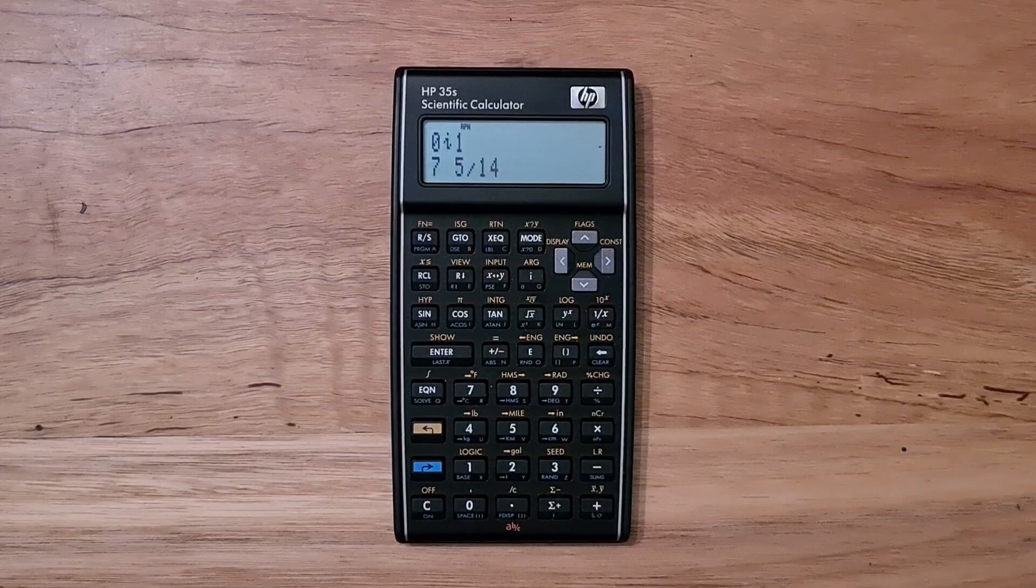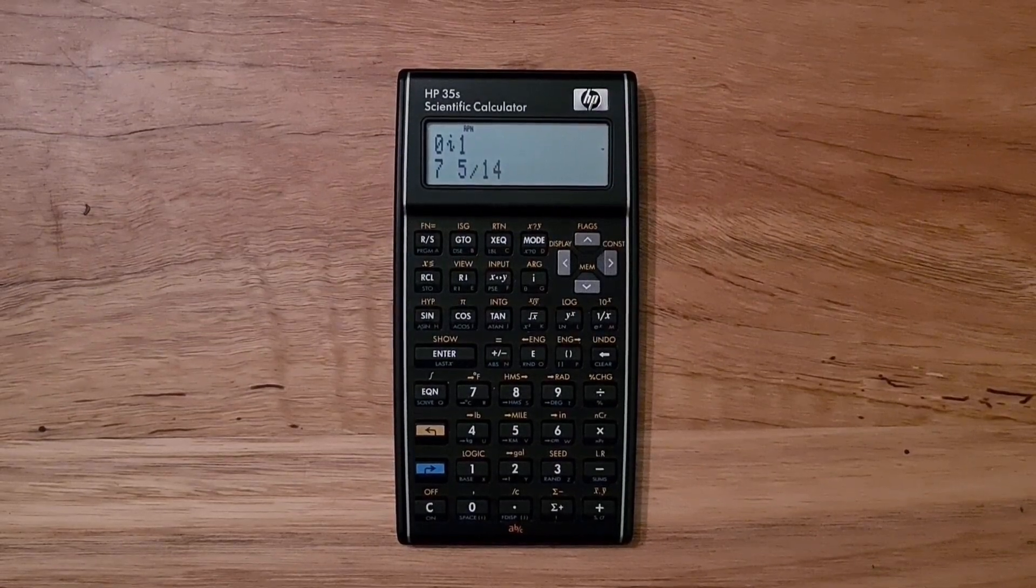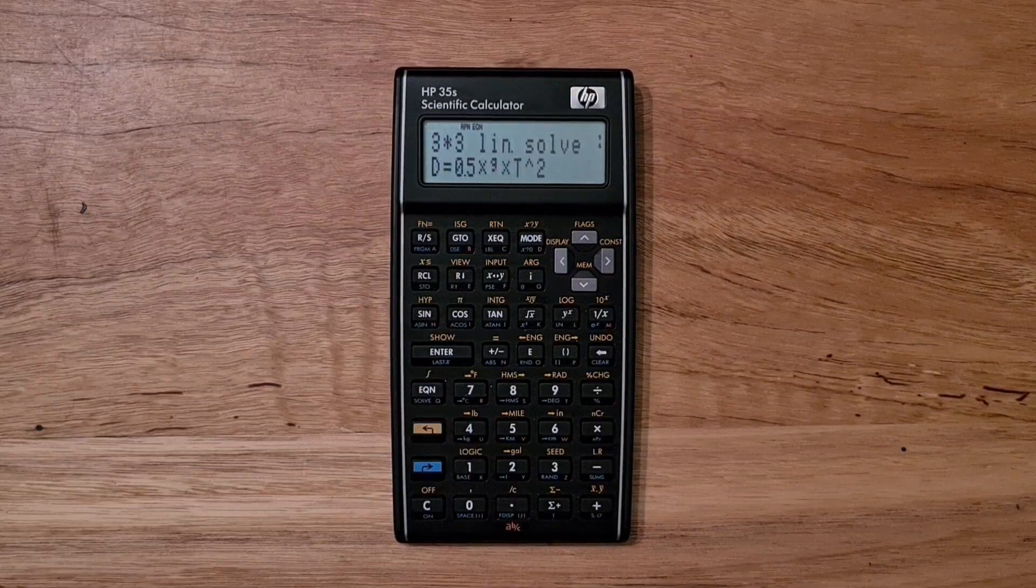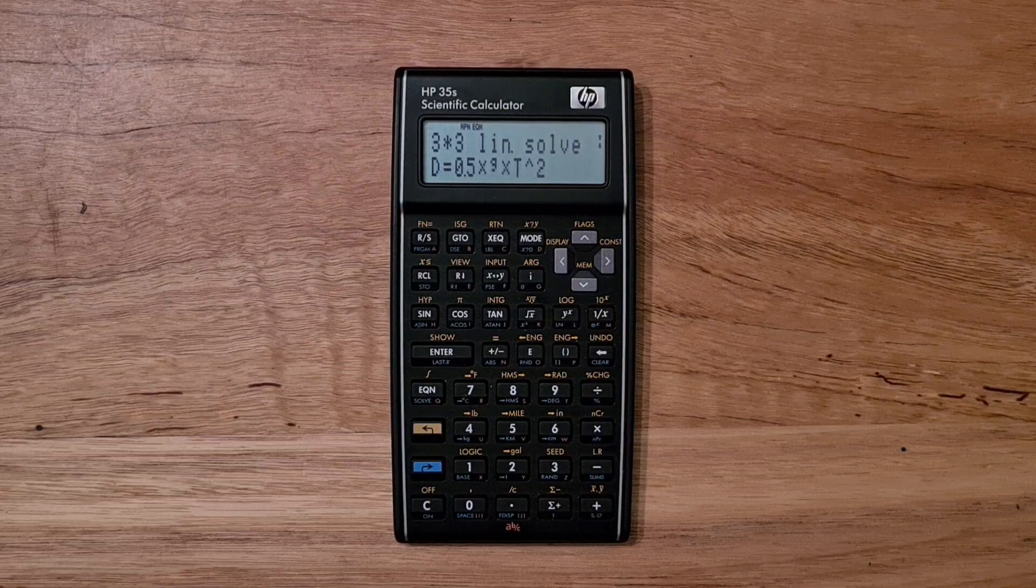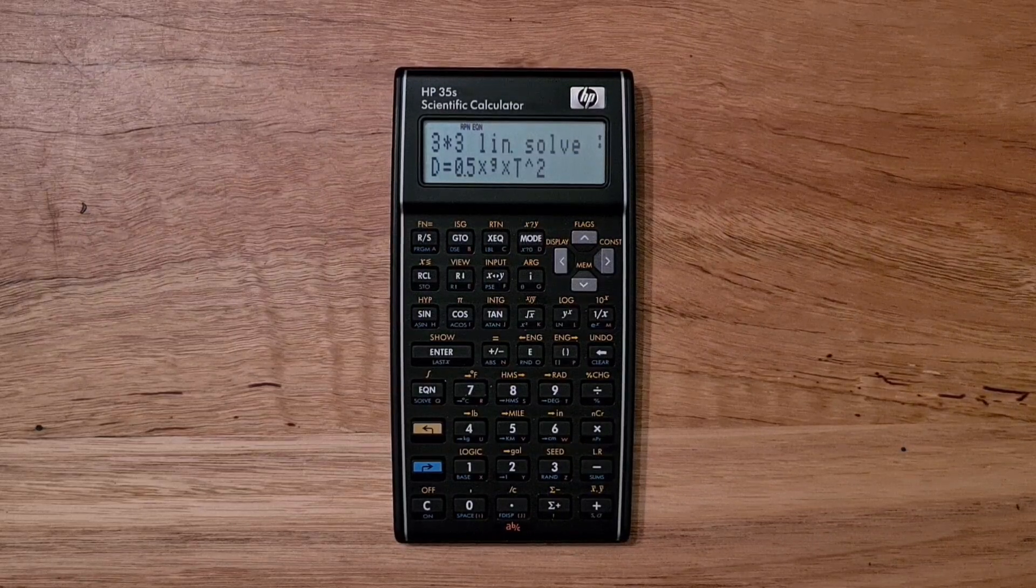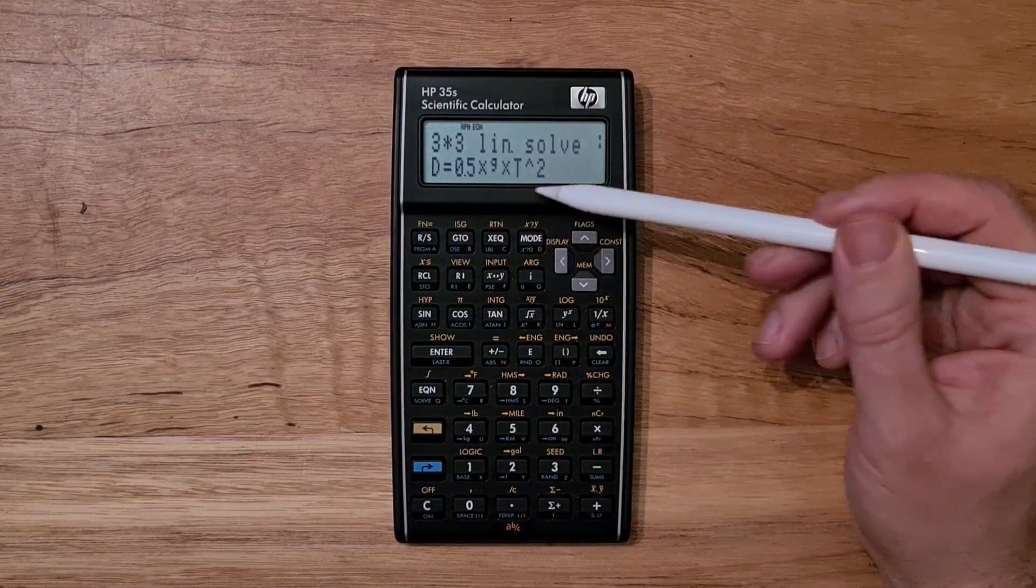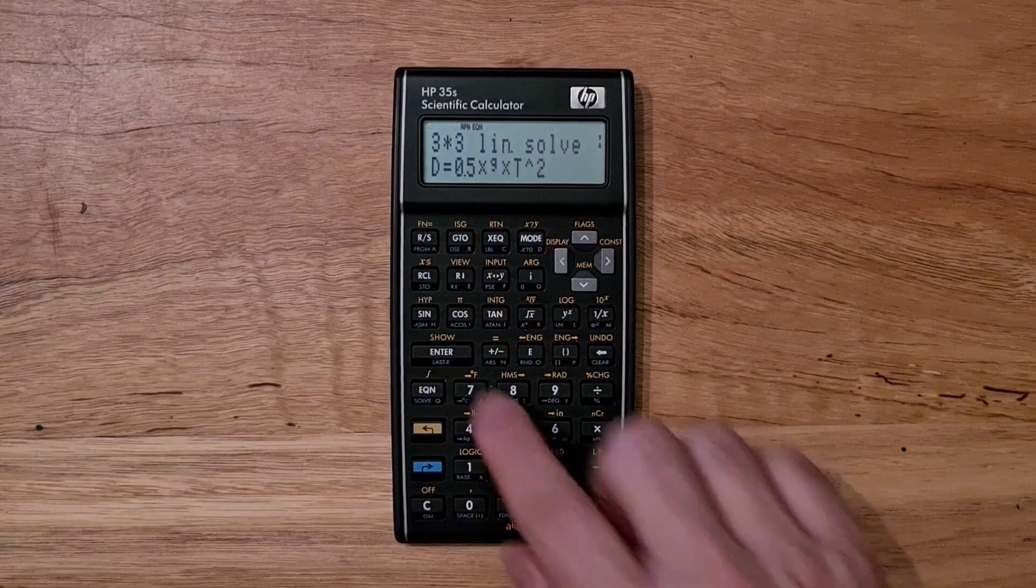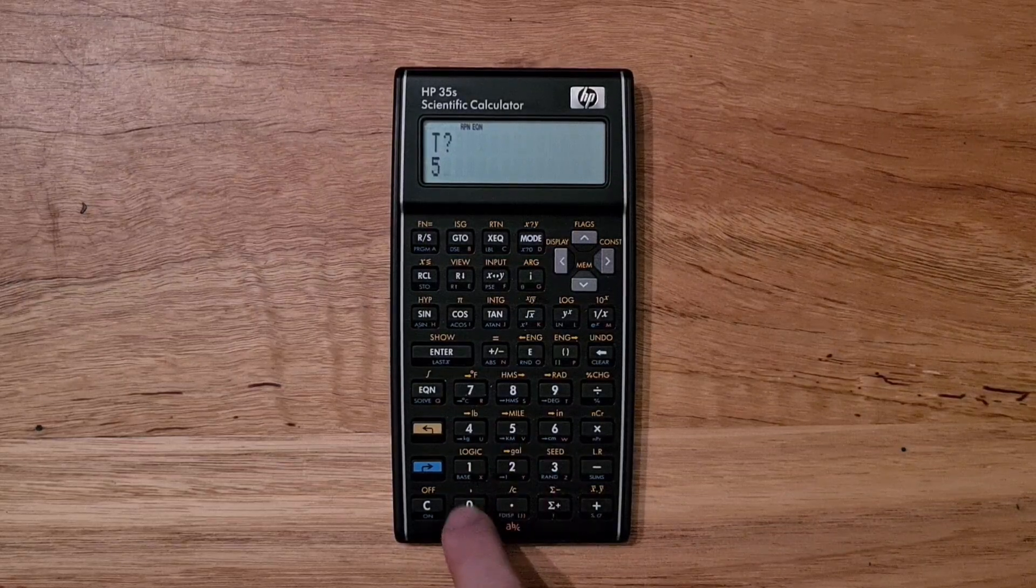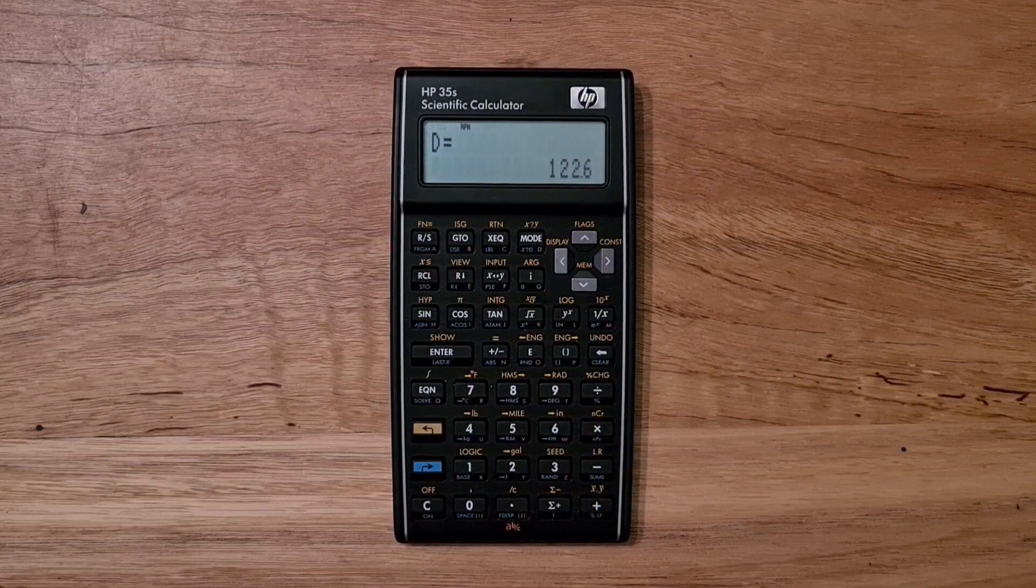Like its immediate predecessors, the 33S and the 32S2, the 35S has an equation mode where equations and formulae can be entered in algebraic syntax. If I wanted to calculate the distance an object falls under gravity, I can just type this equation in. Distance is half times G times time squared. Once I've got my formula, I can hit enter to evaluate it. I can enter a time in seconds, and then I will see the distance result.